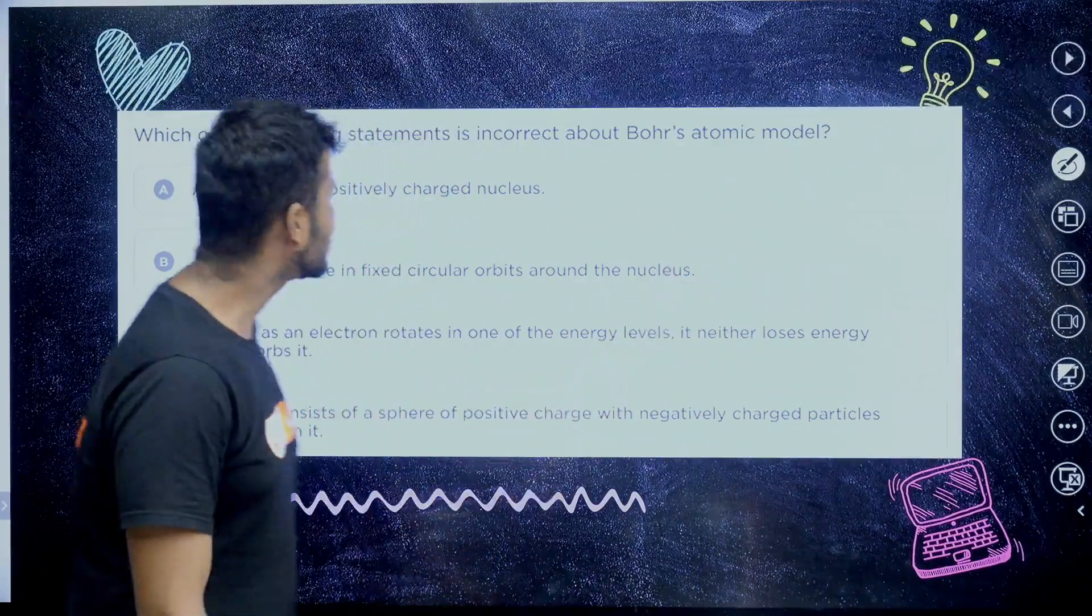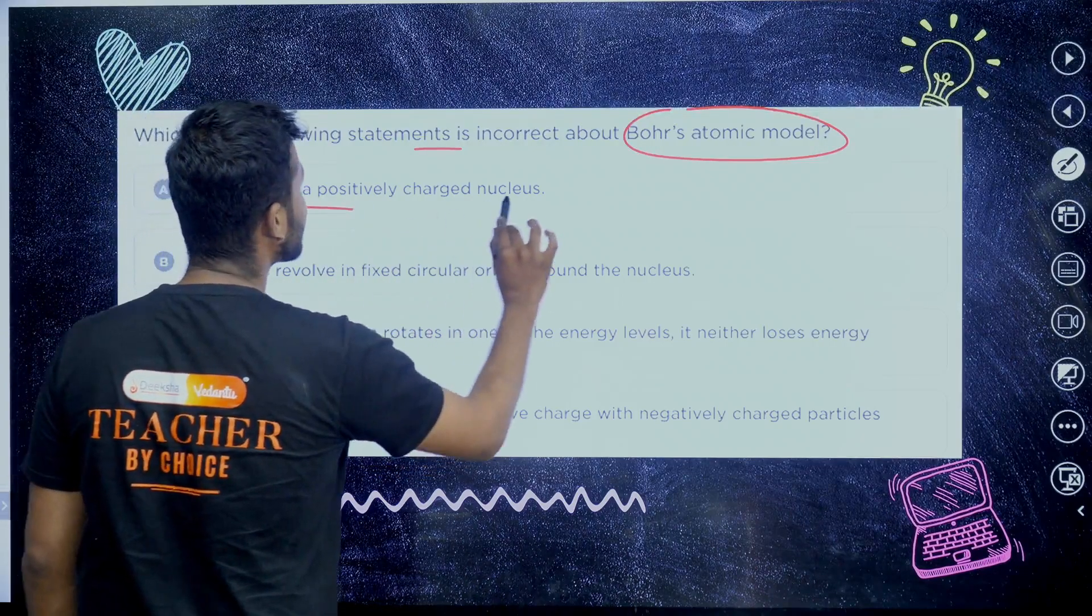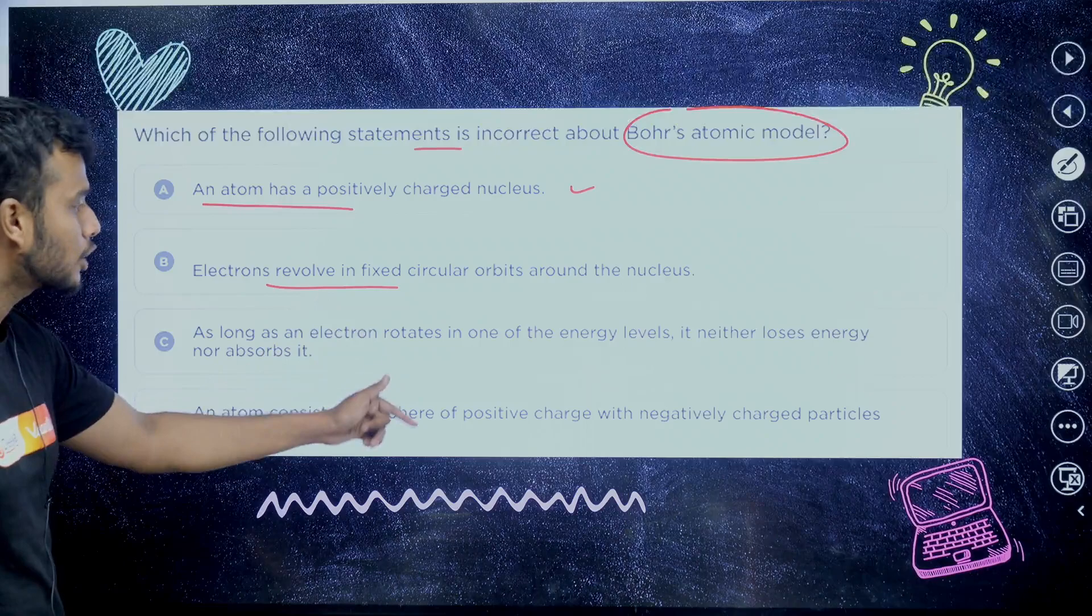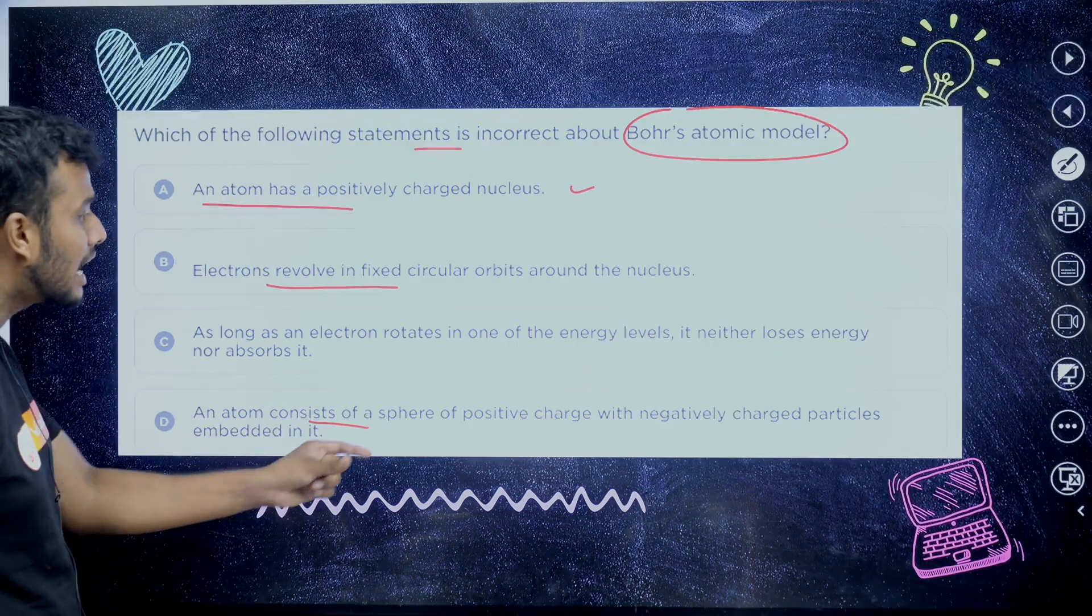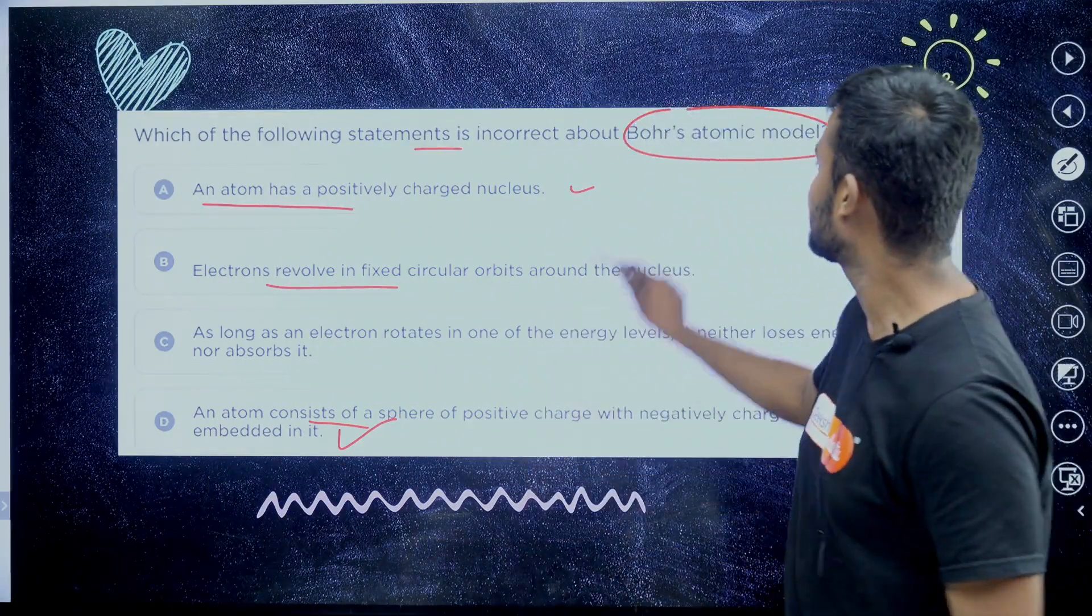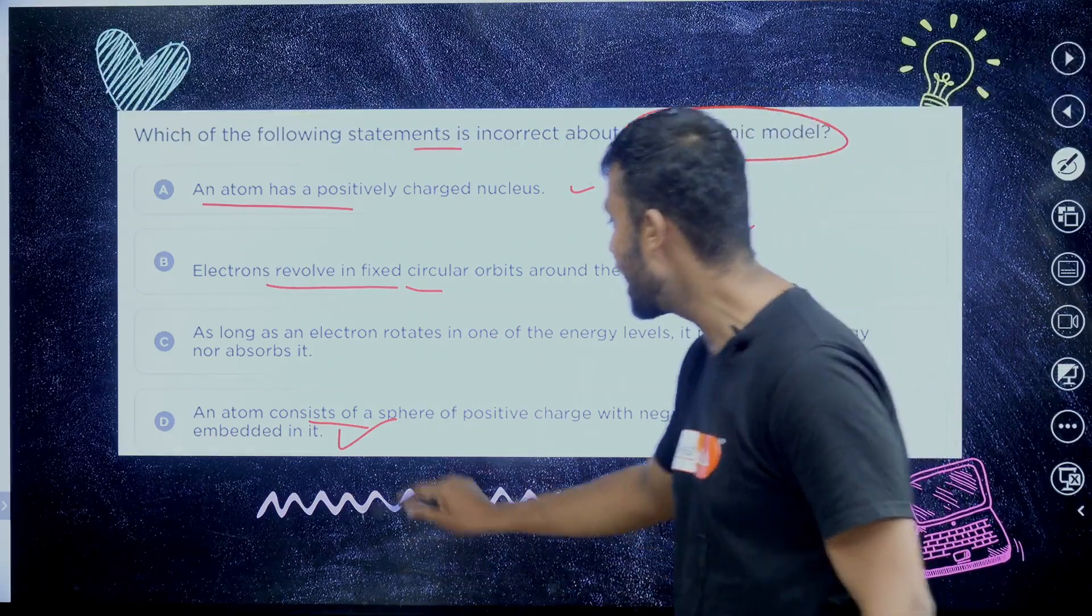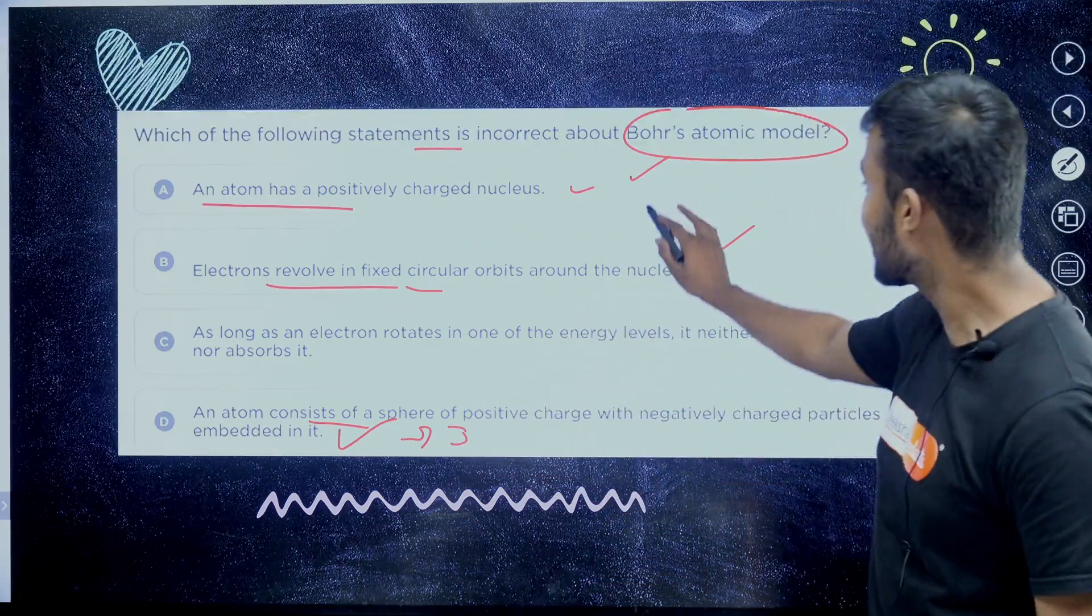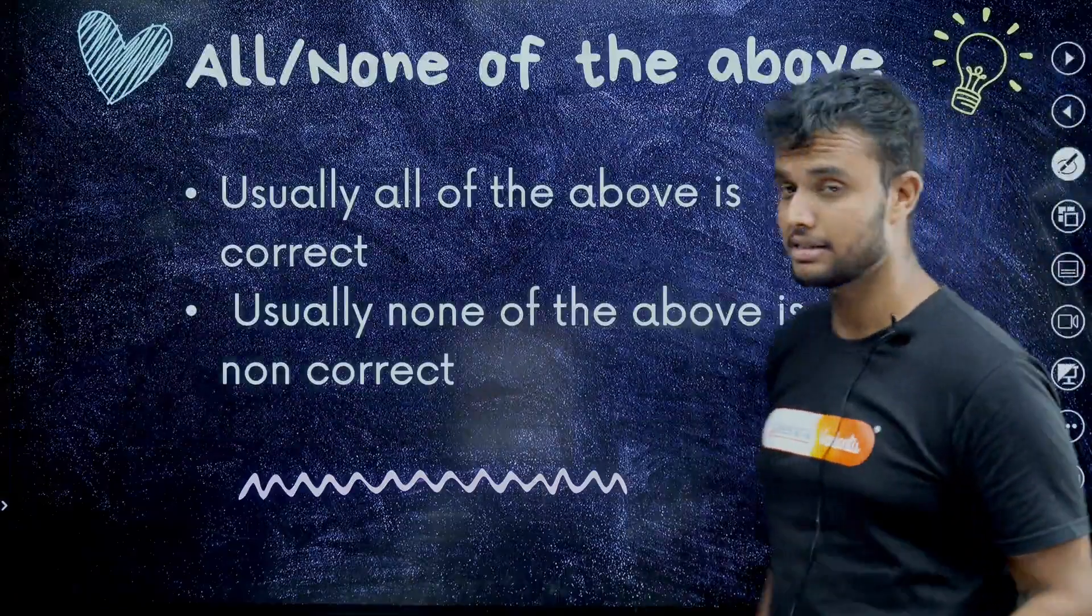For example, in this question, which of the following statement is incorrect about Bohr atomic model? The first option: an atom has a positively charged nucleus, electrons revolve in fixed circular orbits around the nucleus. As long as an electron rotates in one of the energy levels it either lost energy nor absorbs it. And option D: an atom consists of a sphere of positive charge with negatively charged particles embedded in it. This is which model? J.J. Thomson atomic model statement right. That's why look here, compared to these three options, this option is very long. That's why the answer is D. You can guess more than 70%.